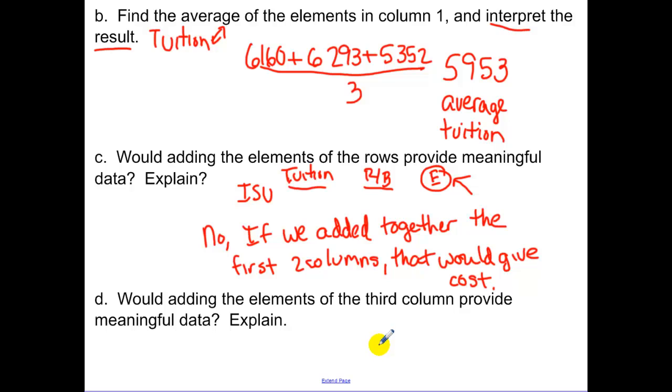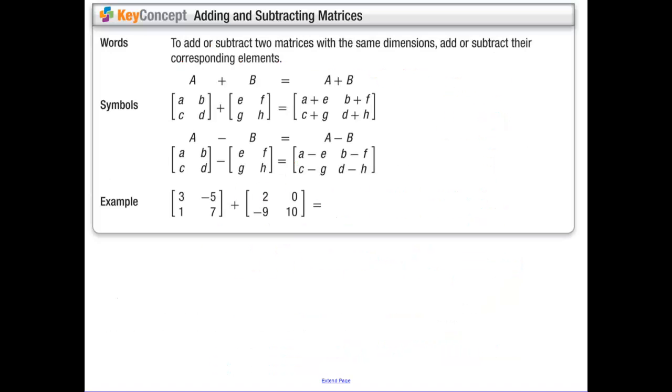Now, would adding the elements of the third column provide meaningful data? Remember, enrollment, adding up the enrollment between the three schools? No. That would just give us total enrollment between the schools.